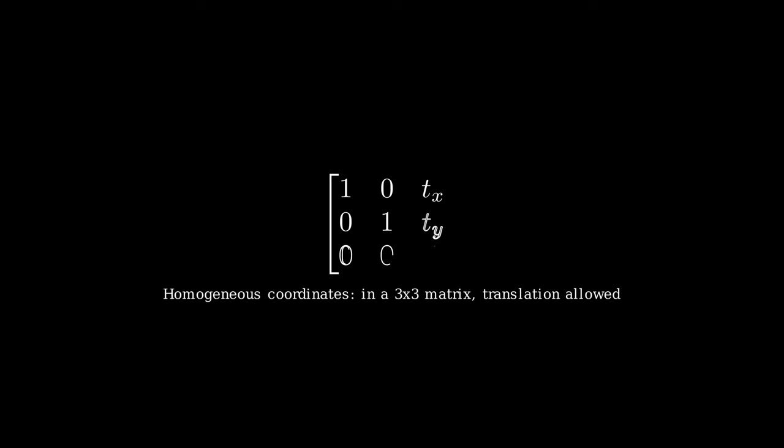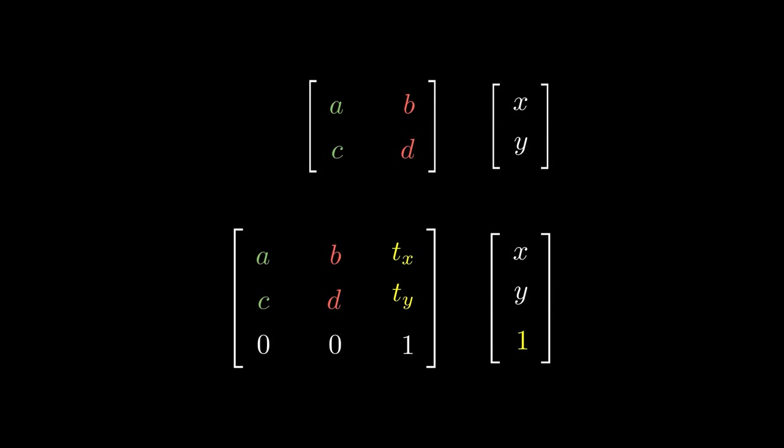Now you know what is a homogeneous coordinate. Let's continue with the why. Why should we accommodate a 2x2 matrix to a 3x3 matrix? Why not just sticking to vector addition?